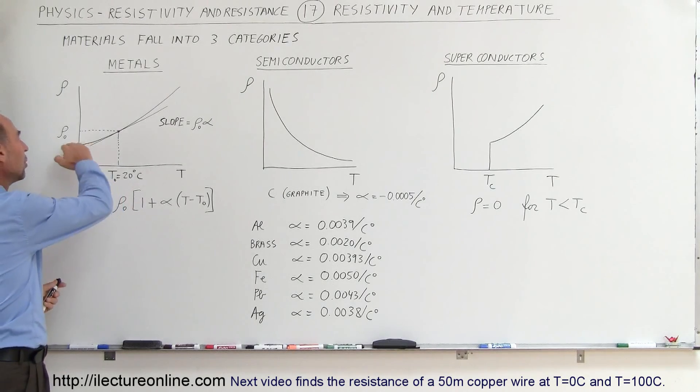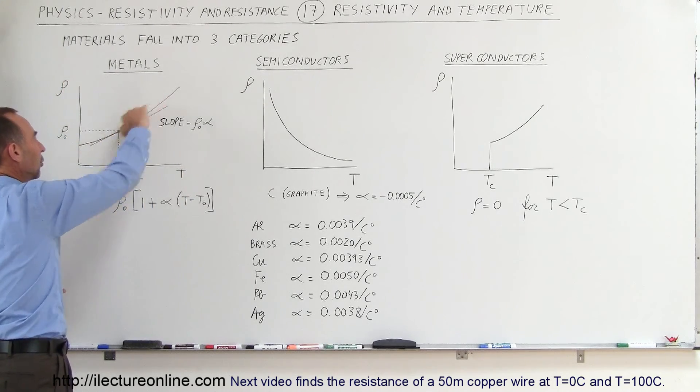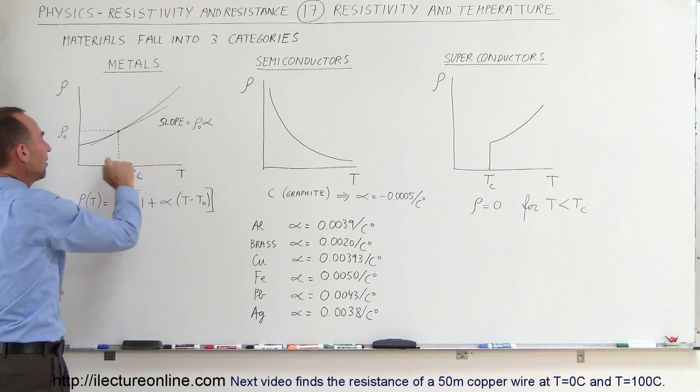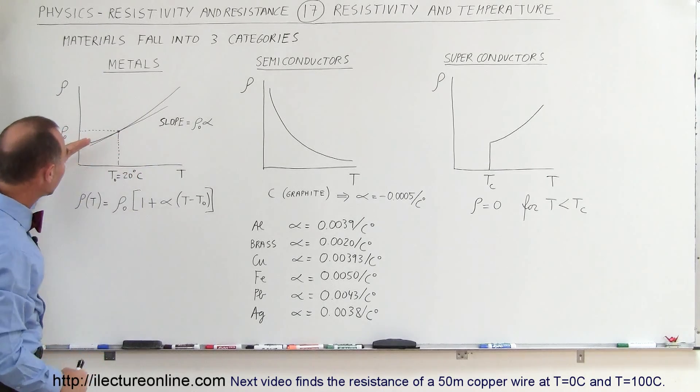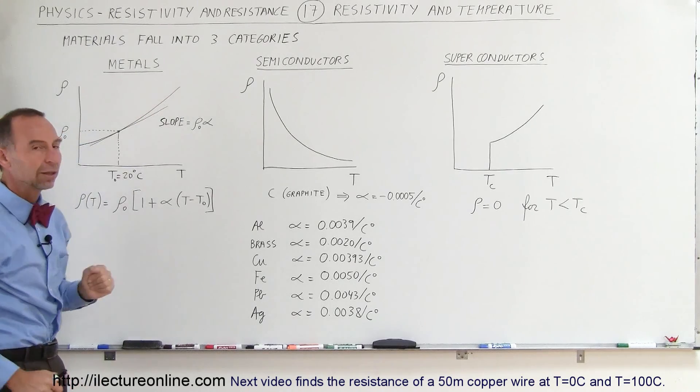We know that the function between resistivity and temperature is somewhat of a curve. But if we draw a tangent line to that curve at the base temperature of 20 degrees centigrade, we can see that that straight line doesn't diverge very much from the curved line.